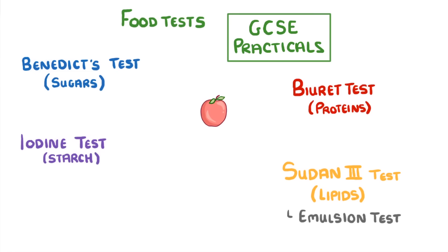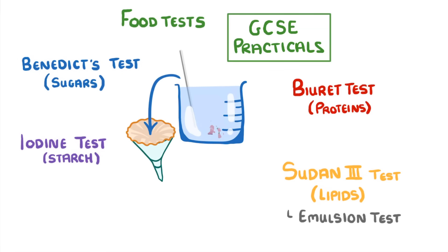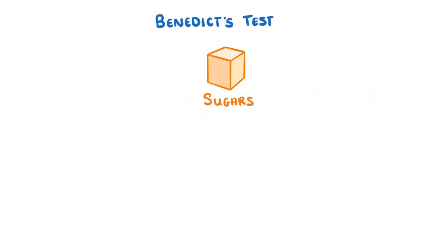Get your piece of food and break it up using a mortar and pestle, then put the crushed food into a beaker with some distilled water and stir it with a glass rod until some of it dissolves. Filter the solution using a funnel lined with filter paper to get rid of all the solid bits of food, and this solution will be your sample for the food tests.